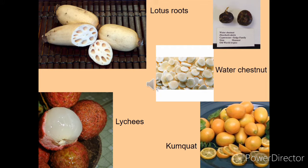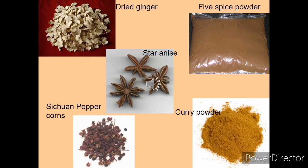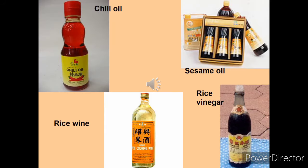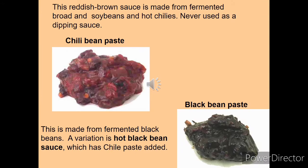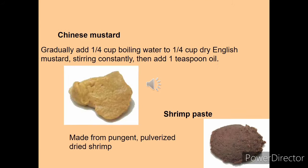Western Chinese people use lots of dry fruits in their cooking. Dry ginger, five spice powder, star anise, Sichuan pepper, onion, peppercorn and curry powder are key spices. Sichuan pepper gives hotness to the food. They also use different types of oils and vinegars like chili oil, sesame oil, and rice wine. Rice vinegar is used especially in southern China where the food is hot and sour. Different types of pastes like chili bean paste and black bean paste — made from fermented black beans — are also used.